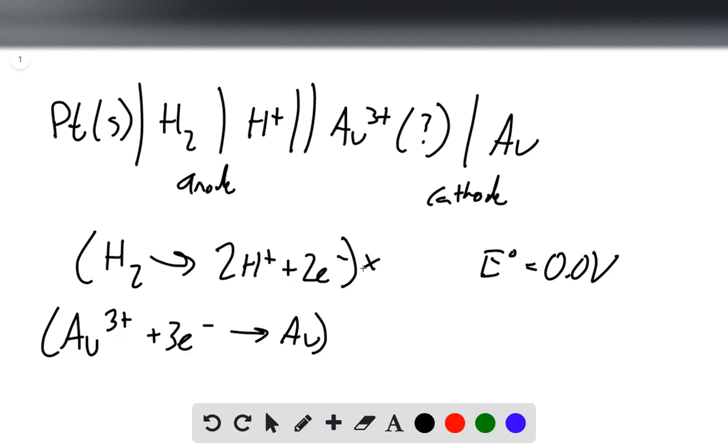We'll need to multiply this one by 3 and multiply this one by 2 in order to balance them. And that gives this an E° of 1.50 volts.